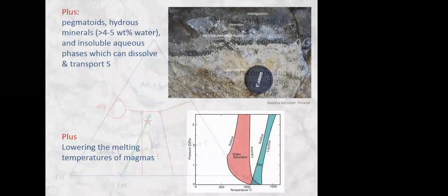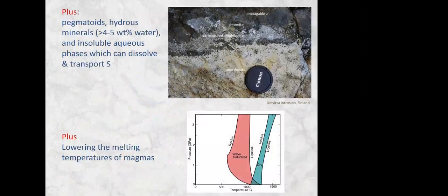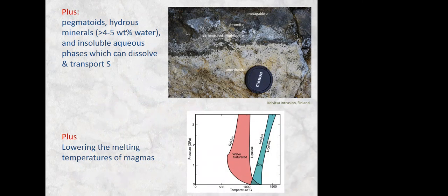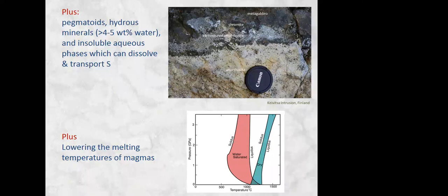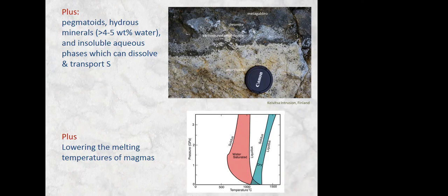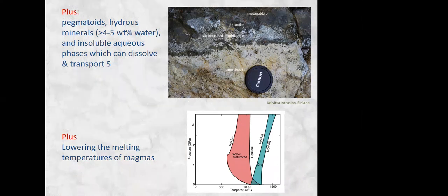The obvious effects of adding water to the magma include facilitating coarser grain mineral growth, such as pegmatoids or heterogeneous grain sizes, what we refer to as varitextured rocks. People like Alan Boudreau have proposed that if we get the water up high enough, so about 5% water in a basaltic system, we will produce an immiscible hydrous phase which can dissolve sulfur and mobilize the chalcophile elements in the system, such as the platinum group metals. And the other effects of higher water contents is that it lowers the melting temperature of magmas.